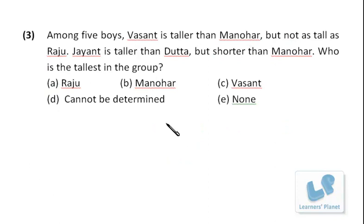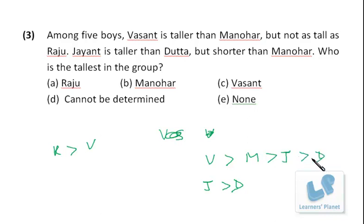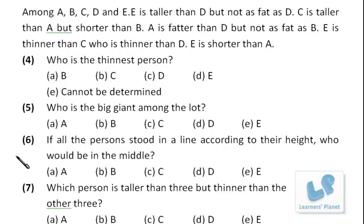Among five boys, Vasanth is taller than Manohar but not as tall as Raju, meaning Raju is taller than Vasanth. Vasanth is taller than the remaining three guys. That means Raju is the tallest.